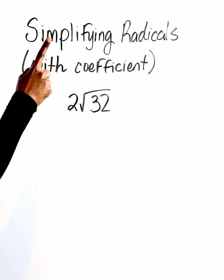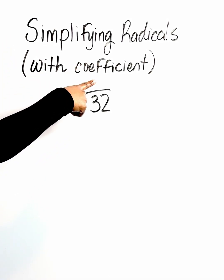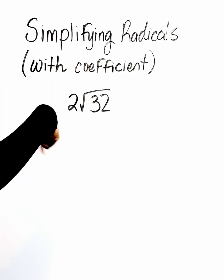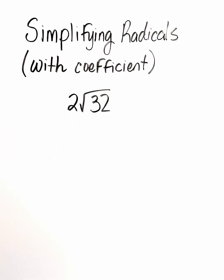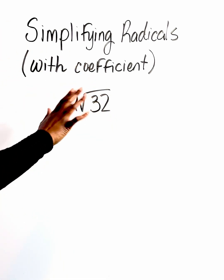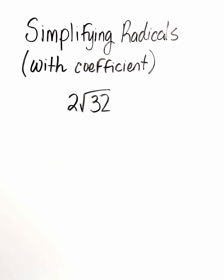So today we are looking at simplifying radicals with a coefficient. A coefficient is going to be a number that is attached to the radical that more times than not, you'll find it right smack dab in the front. So it's not that much of a difference between simplifying radicals without a coefficient versus with the coefficient. There's just one extra little step.